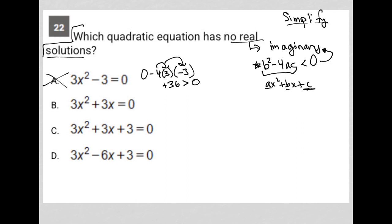Choice B, let's do the same thing. A is 3, B is 3. So b squared is 9, minus 4. A is 3. There is no c term here, so that's zero. This whole thing becomes zero here. This equals 9. 9 is greater than zero, so that's also not going to give us imaginary solutions. Choice B is gone.